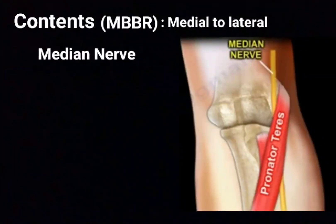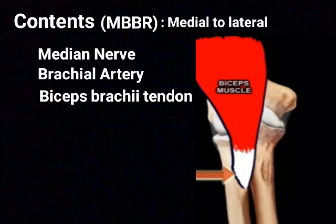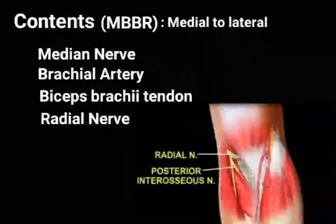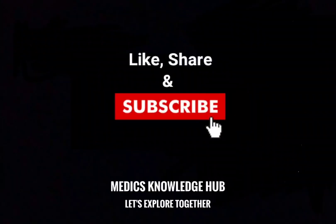You can remember the contents by the mnemonic BBR, arranged from medial to lateral. The most medial structure is the median nerve. Next to the median nerve is the brachial artery, which divides into the ulnar artery and radial artery. Next to the brachial artery is the biceps brachii tendon. The last and most lateral structure is the radial nerve. That's all about the cubital fossa. Thank you.